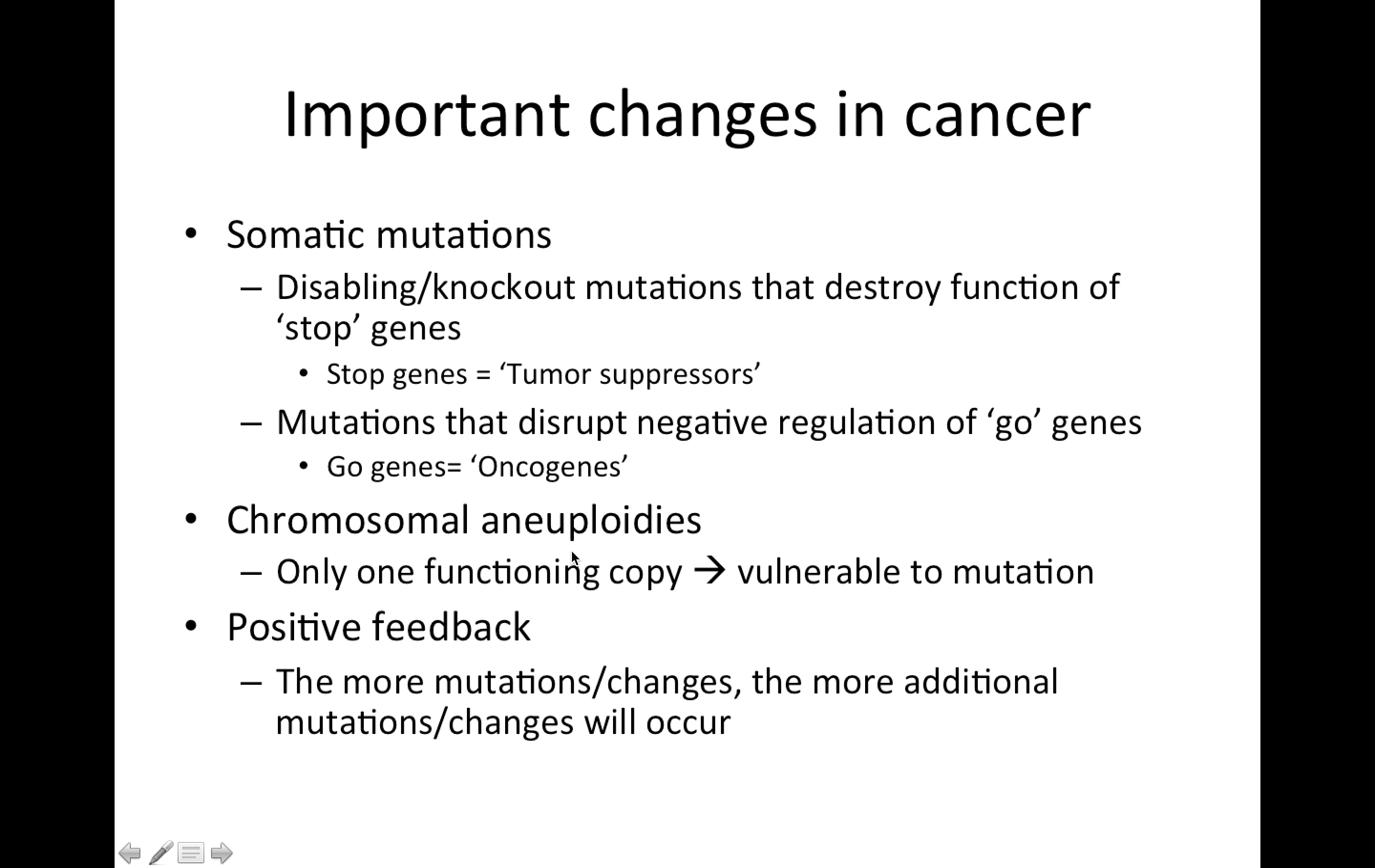We have chromosomal aneuploidies, where we lose a chromosome leading to only one functional copy, leaving us vulnerable to mutation. And finally, that there's positive feedback. The more of these mutations that we have, the more additional changes that will occur because our surveillance systems are down, leaving us with additional problems.